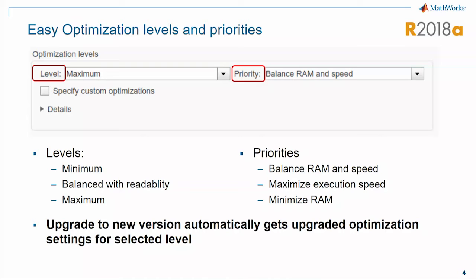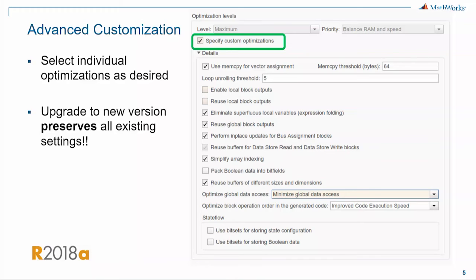The optimization levels essentially have two pieces to it: the optimization level, which controls the scope of optimization, tied together with the objectives — which can be balancing RAM and speed, or maximizing performance, and so on. With an upgrade to a new version, users will automatically get the corresponding set of configuration along with that level.